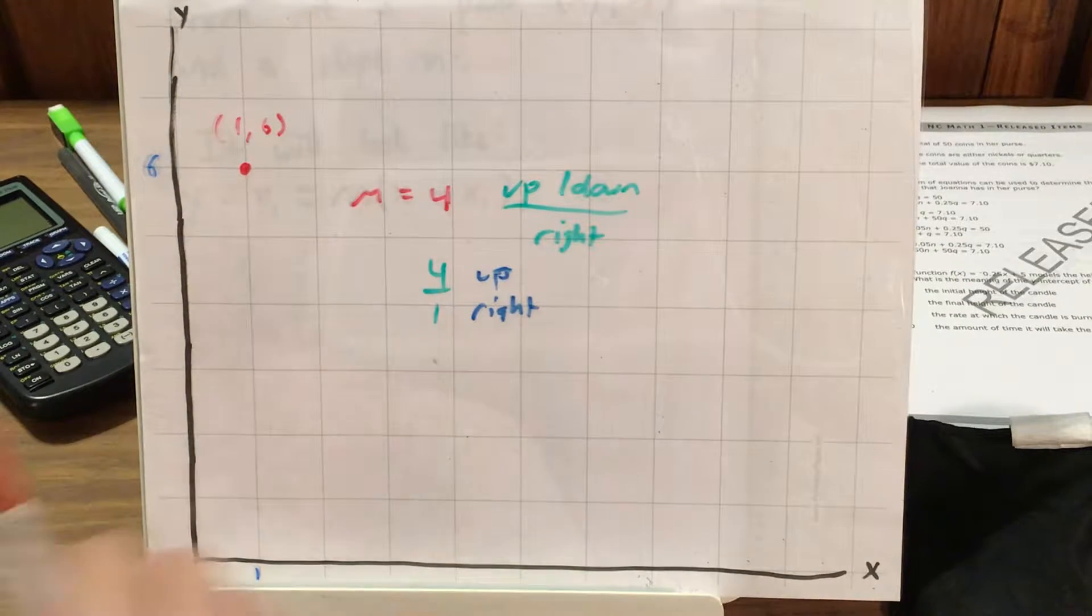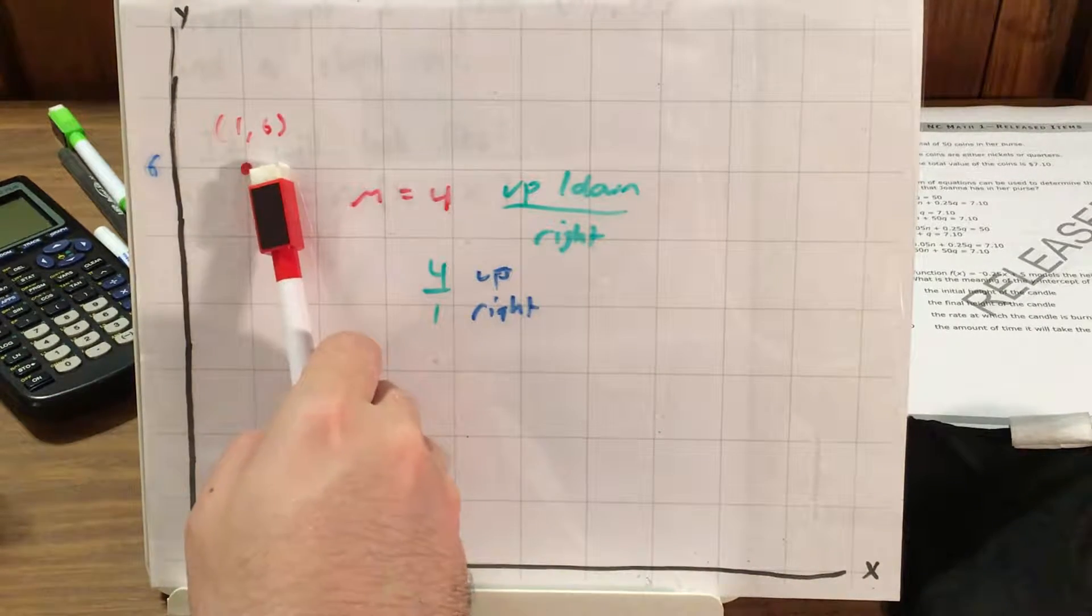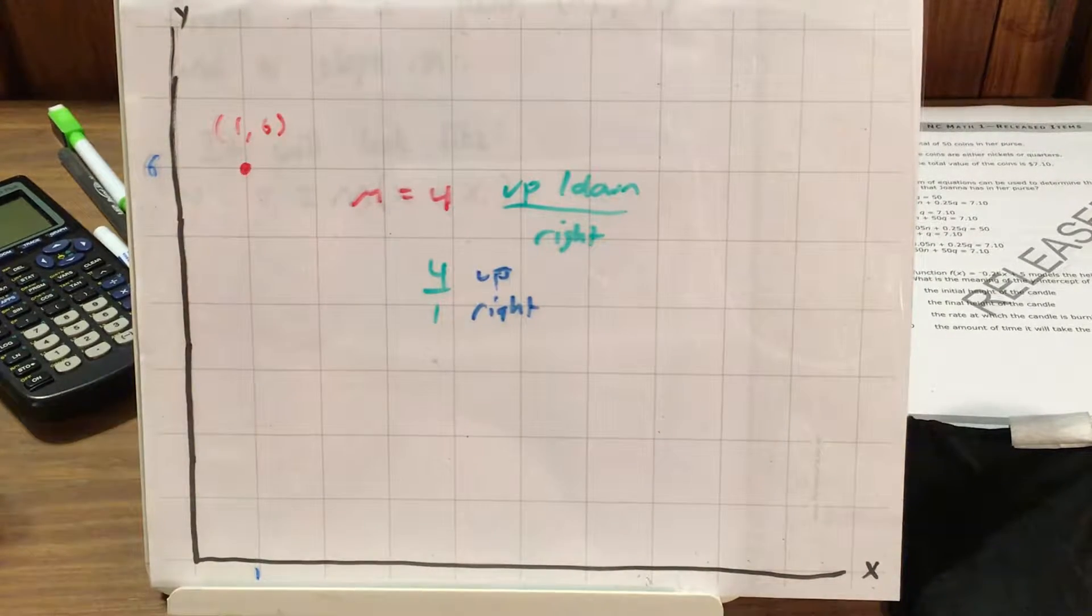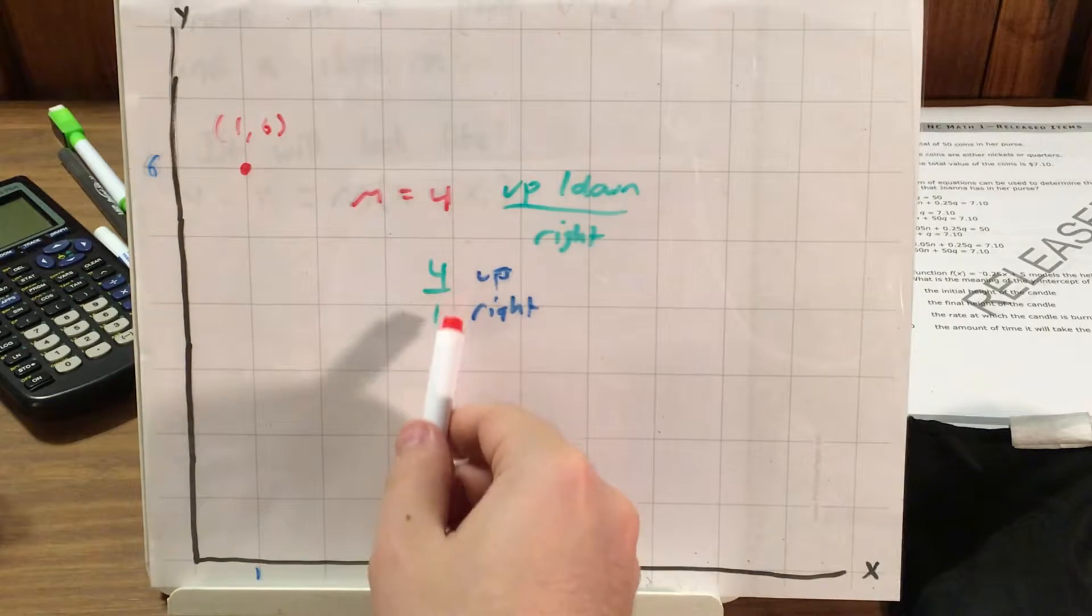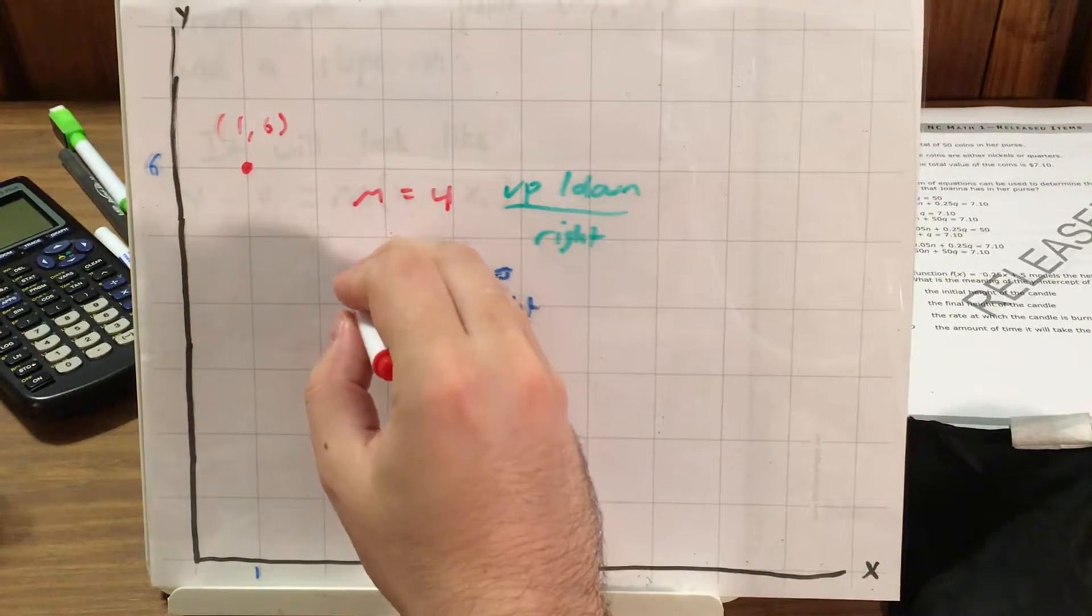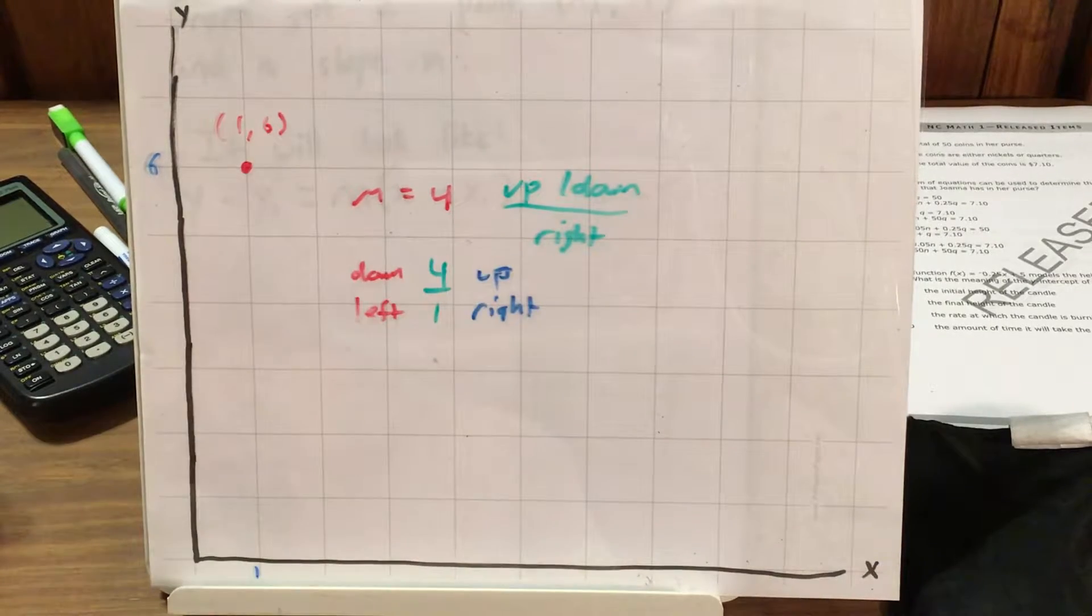And I'm actually going to go ahead and take this the other way, because from this point, we would need to travel left in order to see where we would hit the y-axis and find our y-intercept. So if we're going up as we're going right, if I want to go left, that means I have to go down.